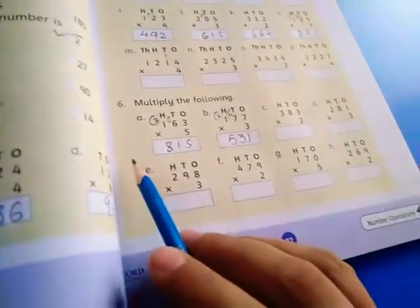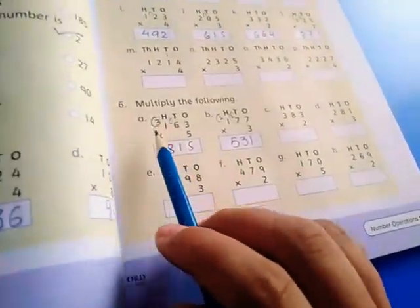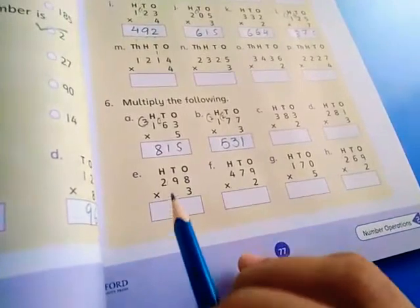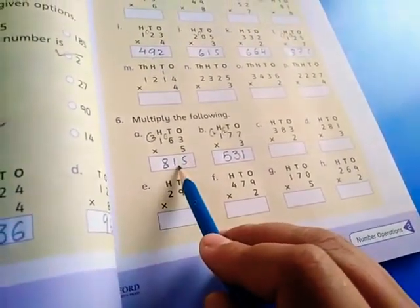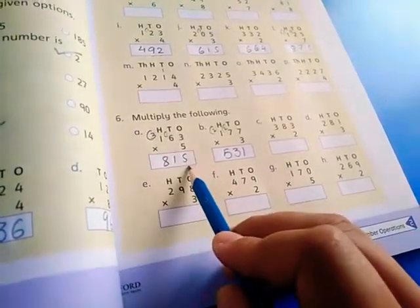Question number 6. These also are multiplications. 163 multiply by 5. 5 threes are 15.